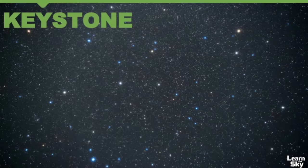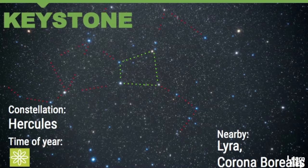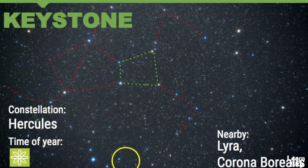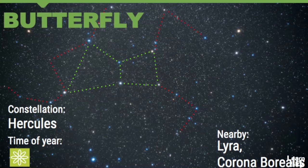Our next asterism is called the Keystone, and it's also located in the spring sky. In this photograph there are multiple constellations, but the Keystone is right towards the center and it connects these four stars. The Keystone is really a part of the constellation Hercules, and the nearby constellations are Lyra and Corona Borealis. I use those two constellations to help me find not only the Keystone but Hercules as well. Sometimes the Keystone morphs into the butterfly asterism, which is also a part of Hercules, so you can use these two different star patterns to help you find this very large constellation.